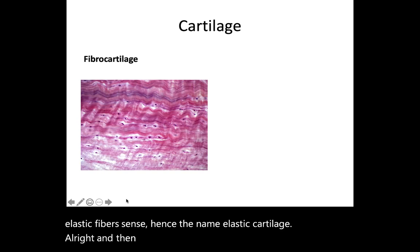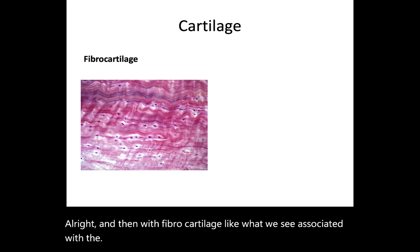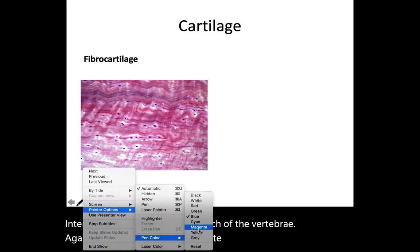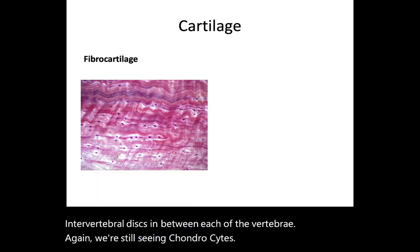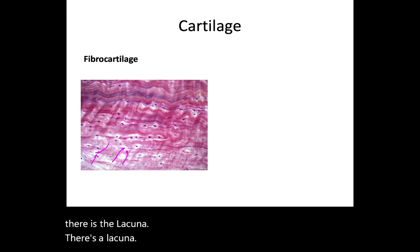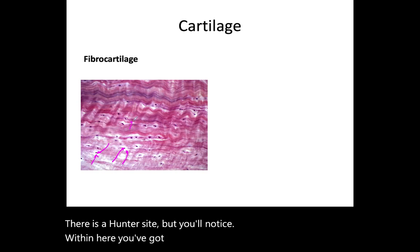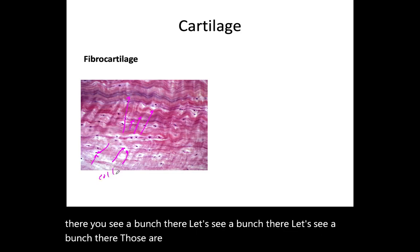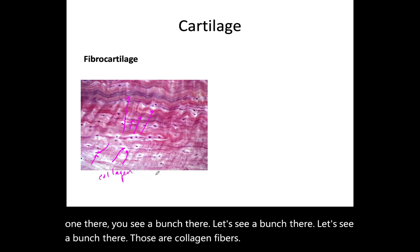With fibrocartilage, like what we see associated with the intervertebral discs between each vertebra, we're still seeing chondrocytes in lacunae. But within the tissue you've got very tightly packed fibers — those are collagen fibers that make up the fibrocartilage.